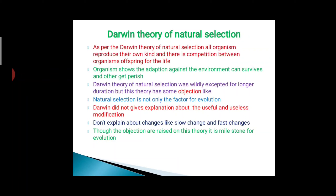Darwin's theory of natural selection was widely accepted for a longer duration. But this theory has some objections, like natural selection is not the only factor for evolution. Darwin did not give an explanation about useful and useless modifications. Darwin's theory does not explain changes like slow change and fast change.